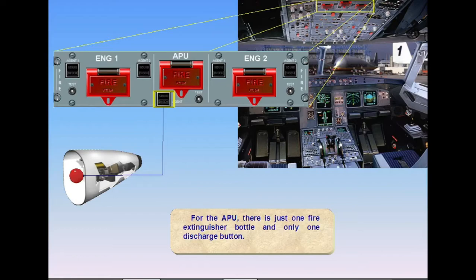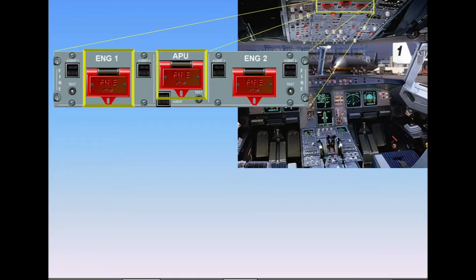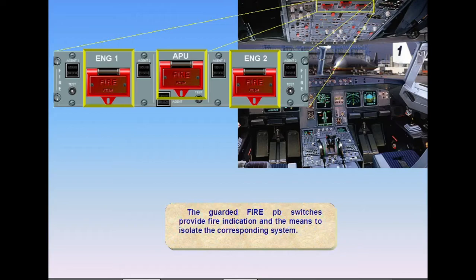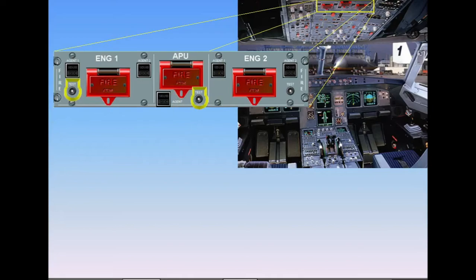The guarded fire push-button switches provide fire indication and the means to isolate the corresponding system. The test buttons are used to test the respective fire detection and extinguishing system operation.